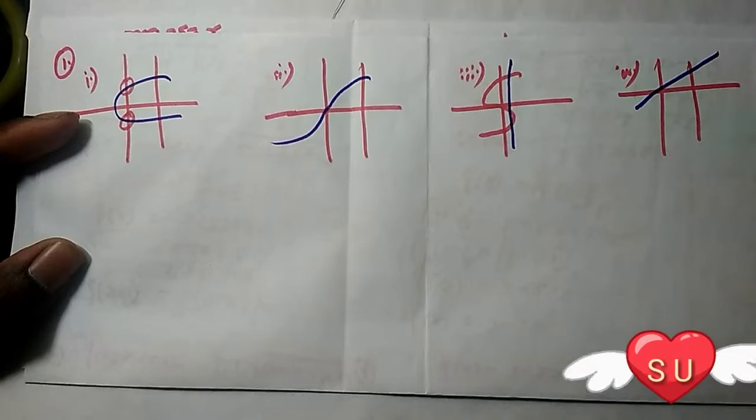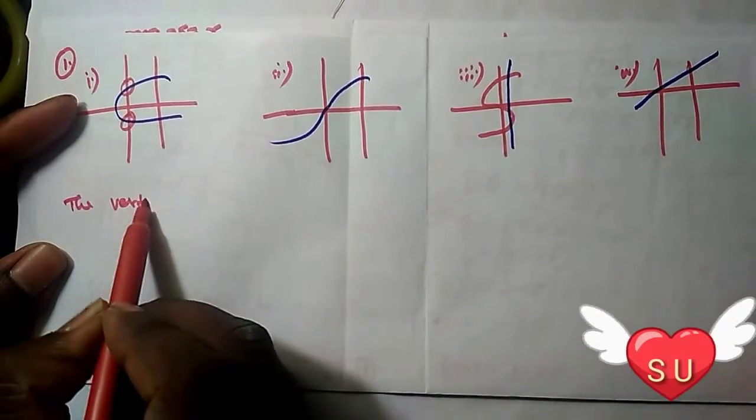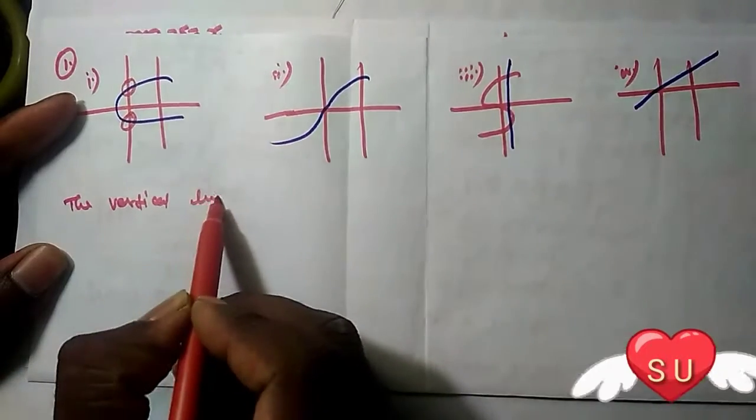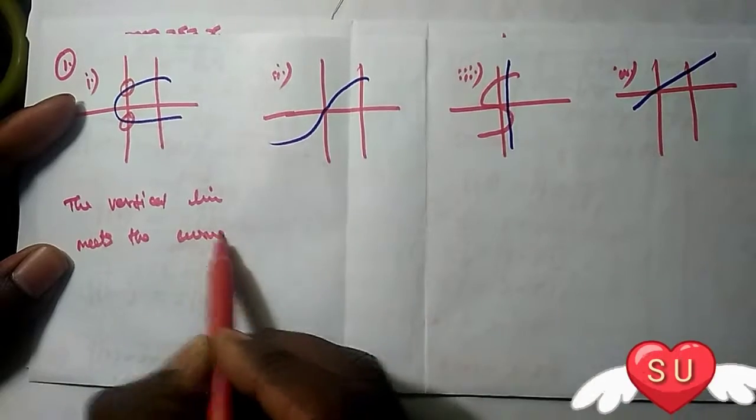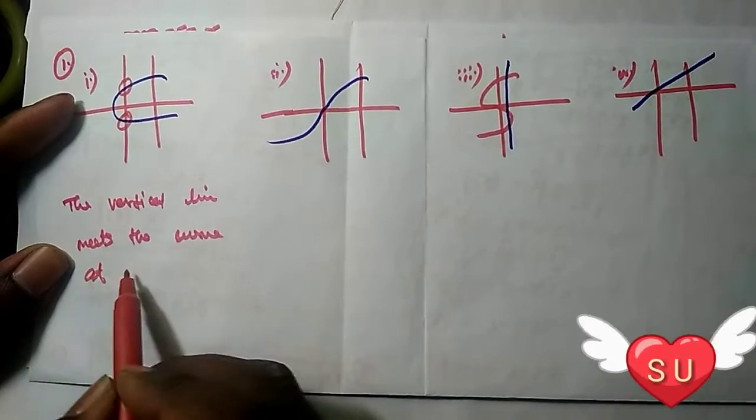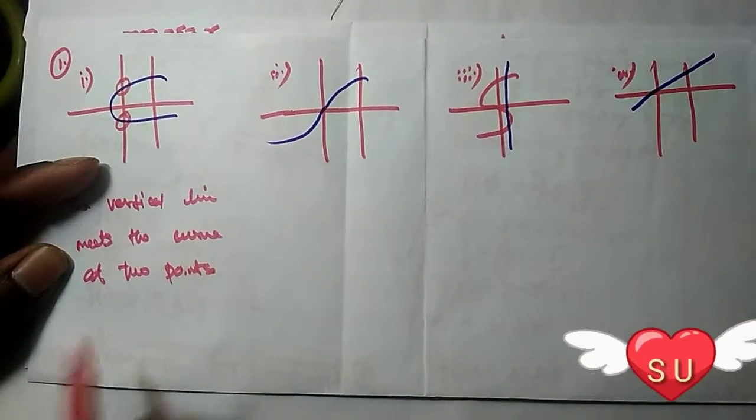Then the vertical line - the vertical line meets the curve at two points. When it meets at two points, it's not a function.